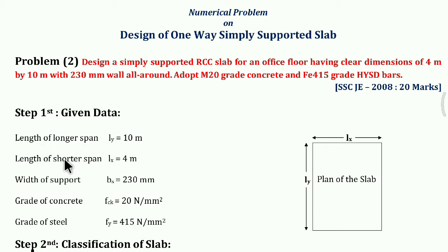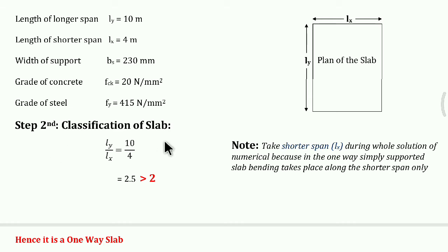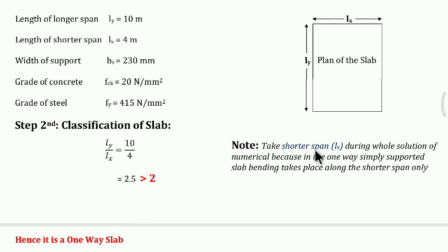Looking at the plan of the slab: Ly/Lx = 10/4 = 2.5, which is greater than 2. Hence it is a one-way slab. The important point here is that we take the shorter span as Lx, because in a one-way simply supported slab, bending takes place along the shorter span only.